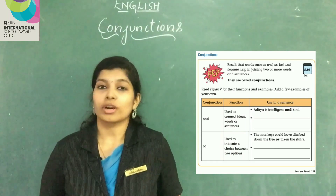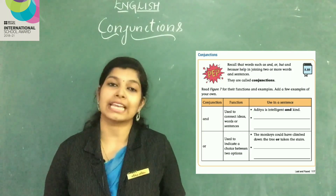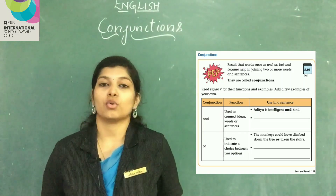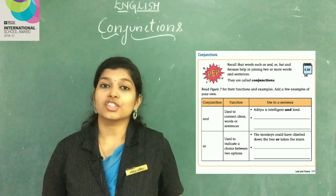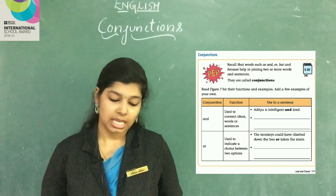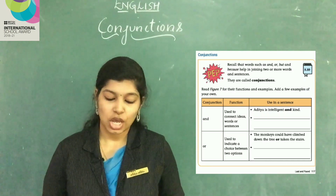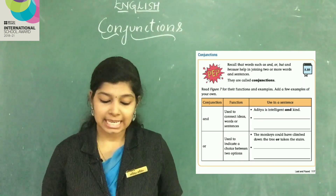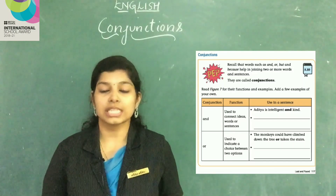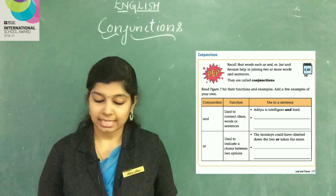Let's learn more about it. Read figure 7 for their functions and examples. Add a few examples of your own. We will learn the function of each of the given conjunctions. First one: 'and' — used to connect ideas, words or sentences. For example: Aditya is intelligent and kind.